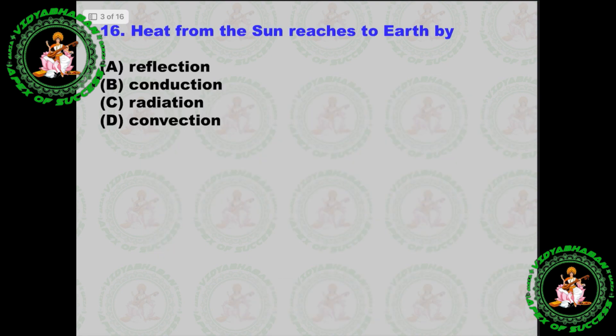Question number 16: Heat from the sun reaches the earth by which process? The answer is radiation.